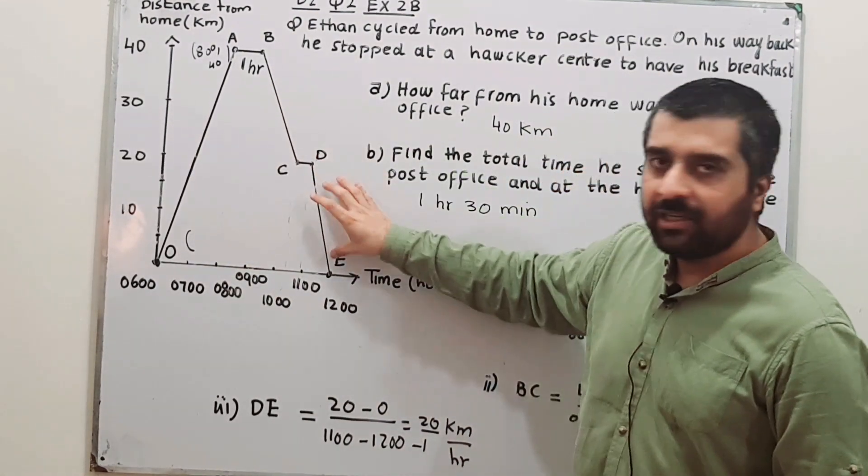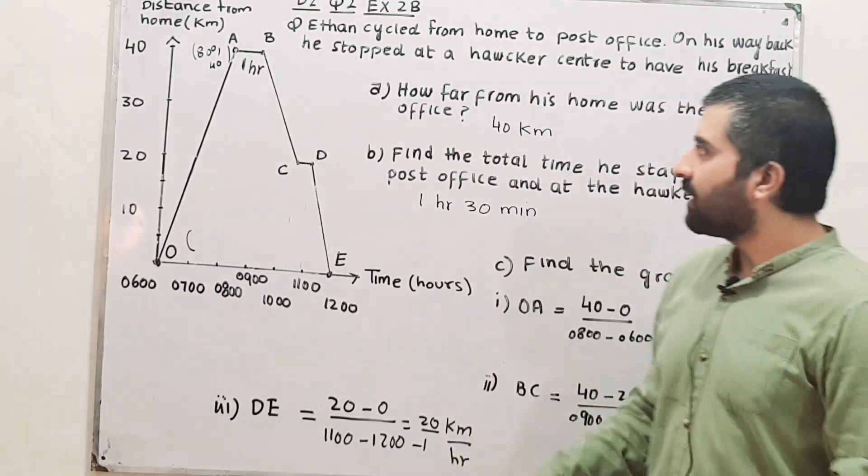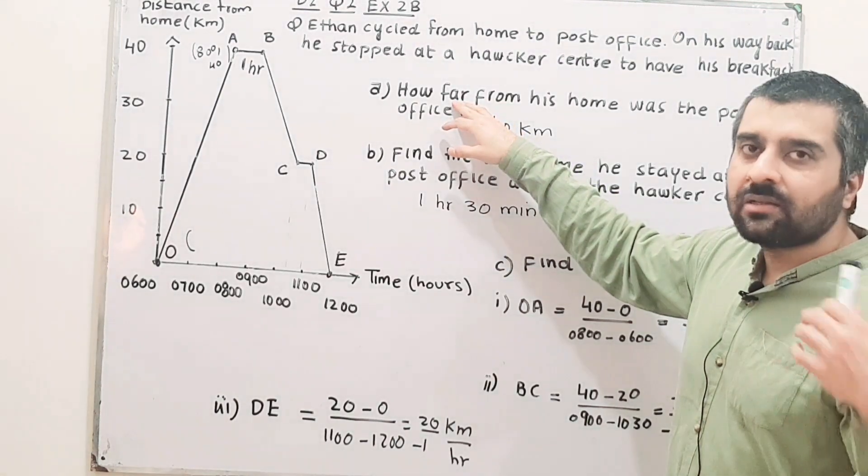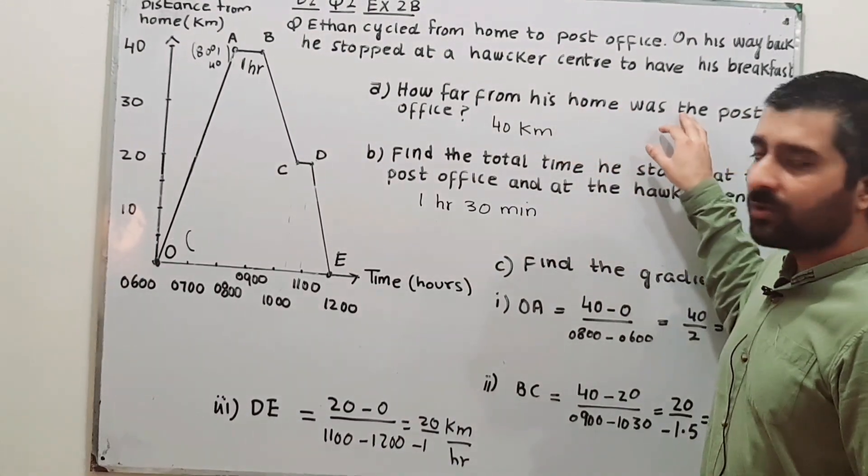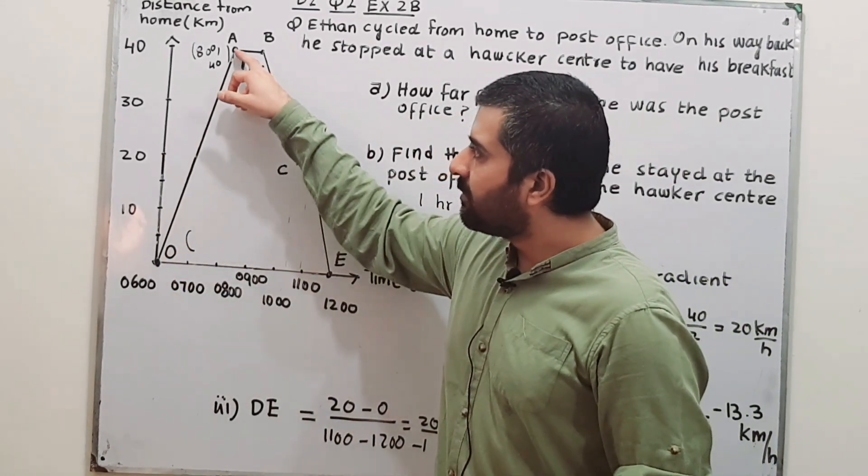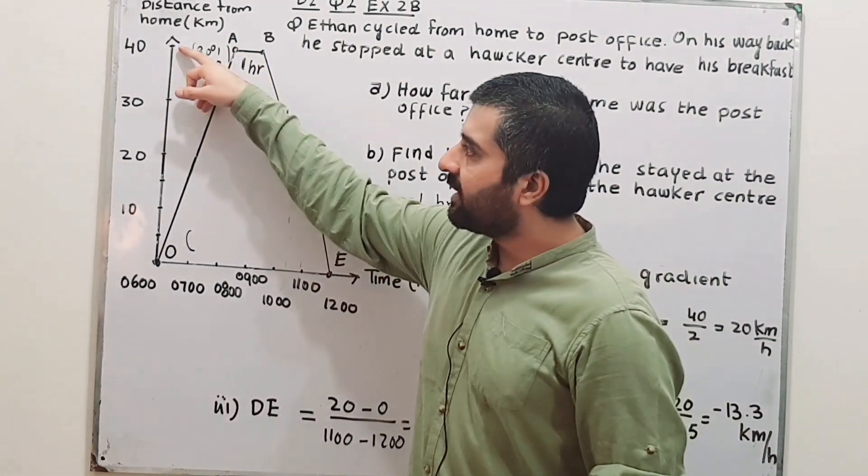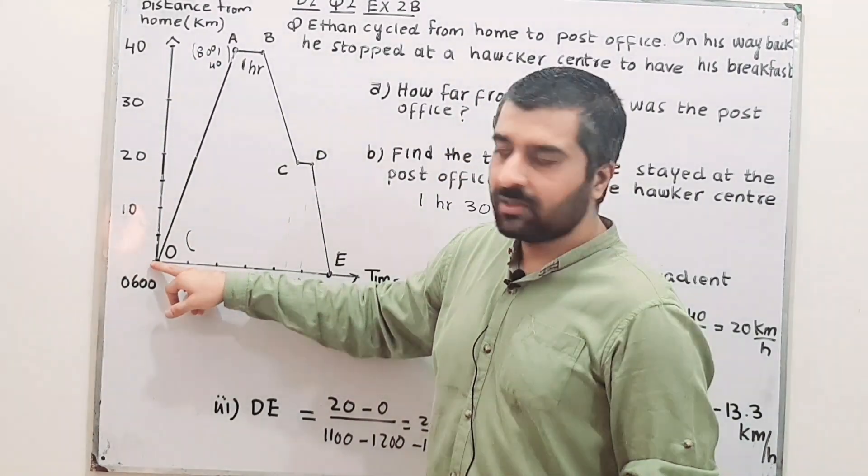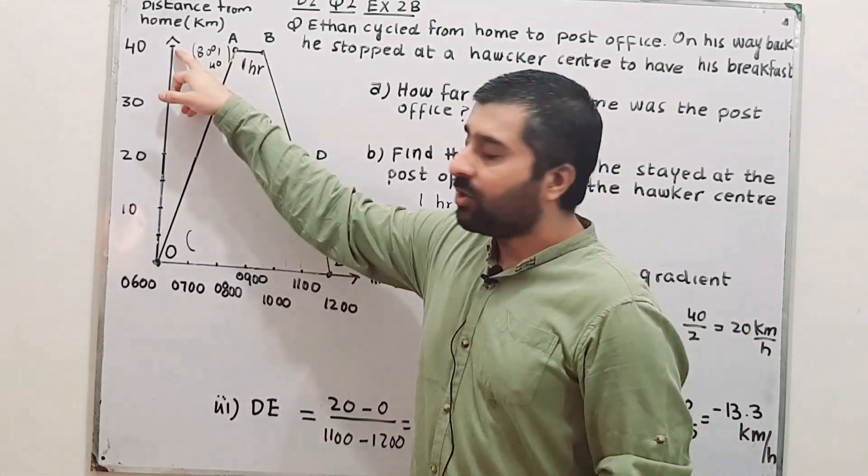Part A asks how far from his home was the post office. Far means the distance. This is his home, this is the post office. The distance between his home and the post office is on the y-axis: 40 km. Here the distance is 0, and at the point where the post office is located, the distance on y-axis is 40.